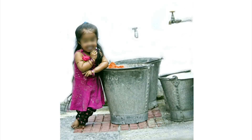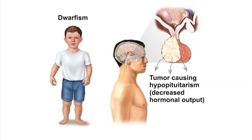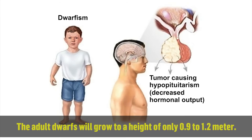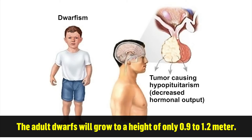Deficiency of growth hormone, or hyposecretion, in children results in retarded growth. The premature arrest of skeletal development causes dwarfism. The adult dwarfs will grow to a height of only 0.9 to 1.2 meters.